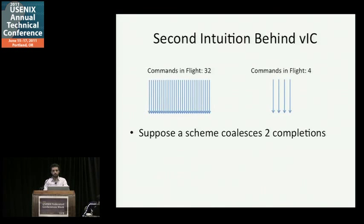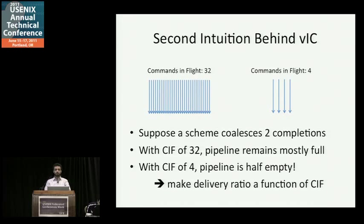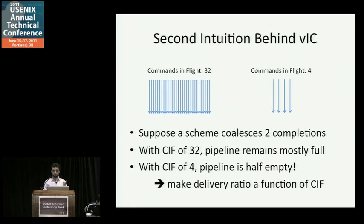The second intuition is best illustrated by an example. Suppose you have an application with 32 commands in flight, and another with four commands in flight — think of this as the pipeline depth. Suppose a scheme coalesces two completions. With a pipeline depth of 32, coalescing two completions doesn't reduce that pipeline much in percentage terms. Whereas if you did that for four commands in flight, you're effectively halving the pipeline depth, which has consequences on achieved throughput. This motivates tying together the delivery ratio and commands in flight, coming up with a function that makes the delivery ratio a function of commands in flight.